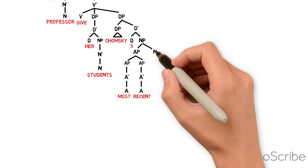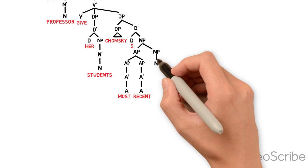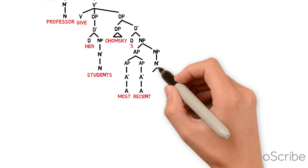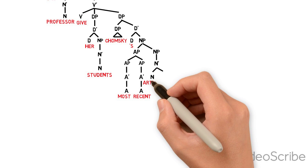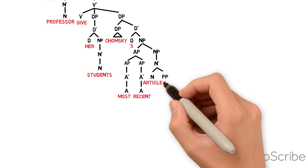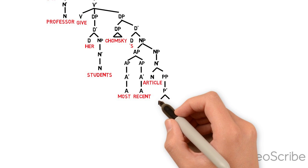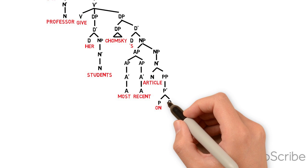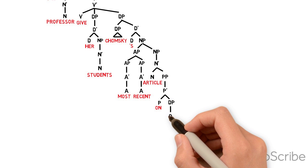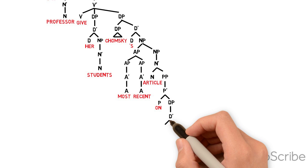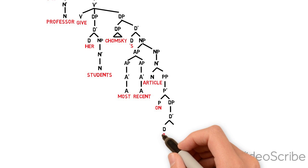Then we have our NP, which includes the noun article, which has a PP complement, which includes on, and then a DP complement syntax. Syntax, we do need to write out the full structure because it has a null determiner.